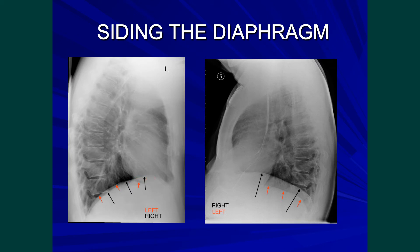The left hemidiaphragm on the other hand stops at the cardiac silhouette, and this is because the heart shadow has the same radiographic density as the diaphragm.